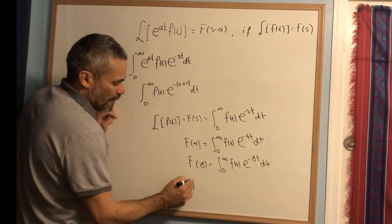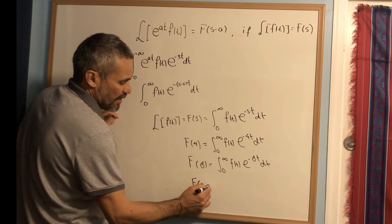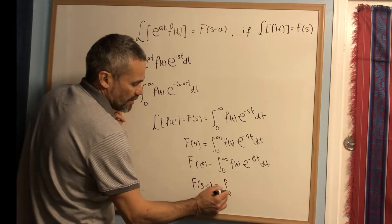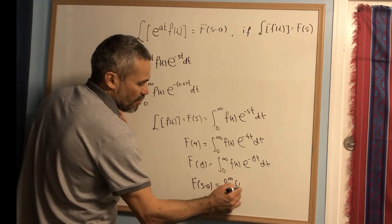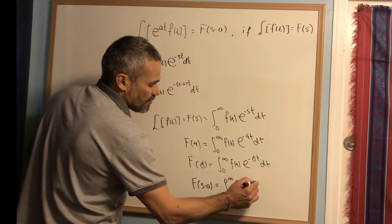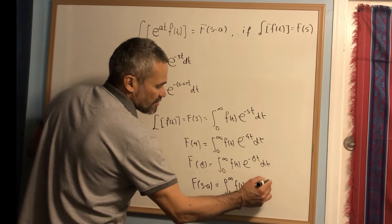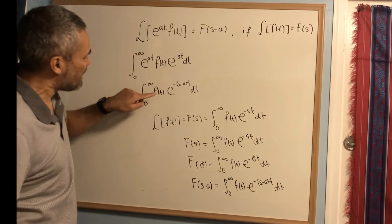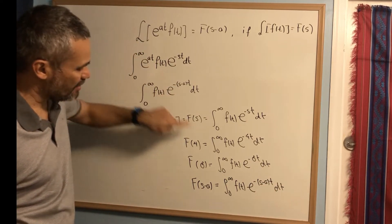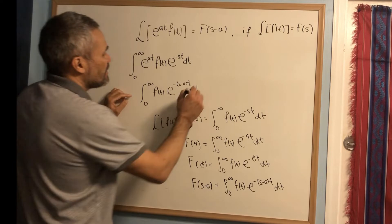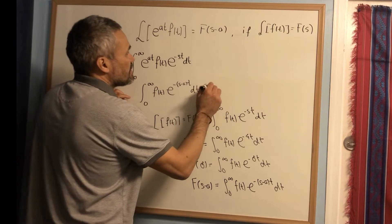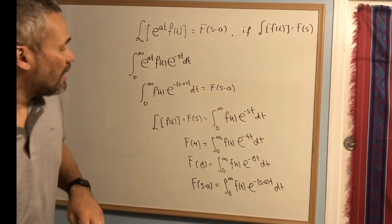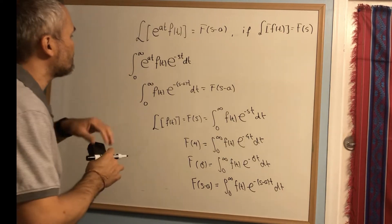Similarly, F(s-a) would be the integral from zero to infinity of f(t) e^(-(s-a)t) dt. This is exactly what we have here, so the Laplace transform of e^(at) f(t) is simply F(s-a).